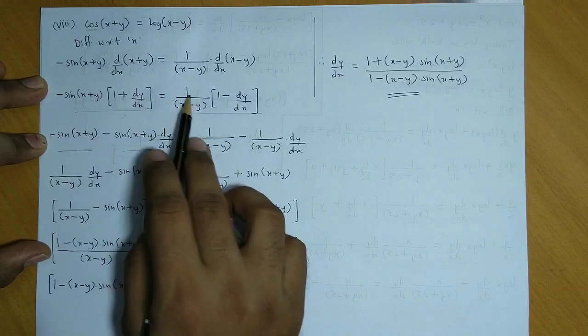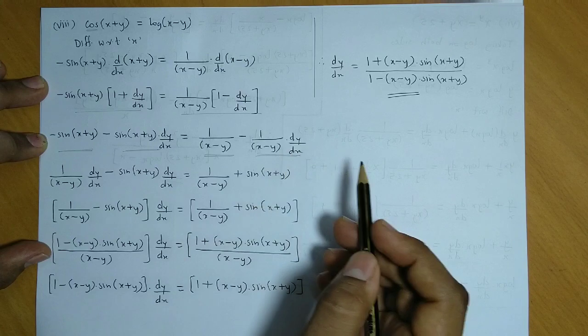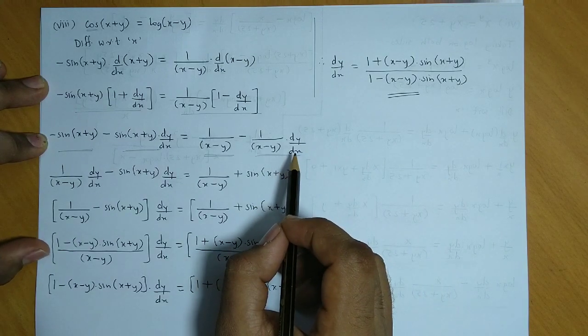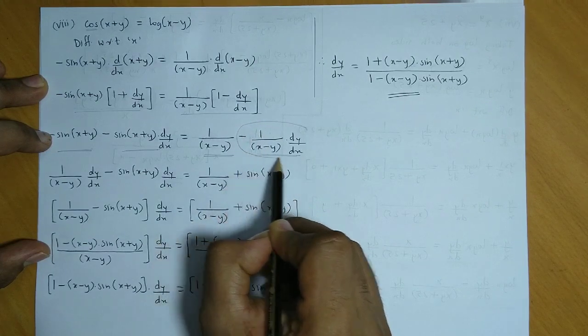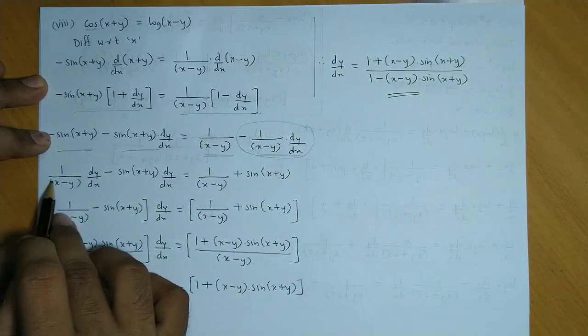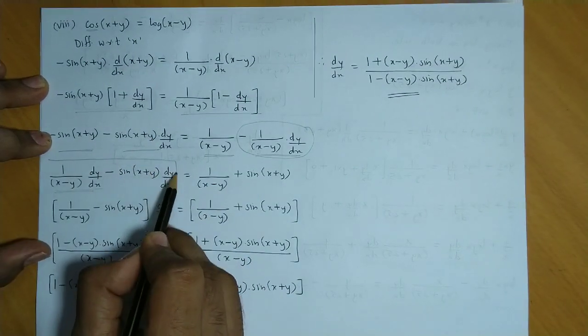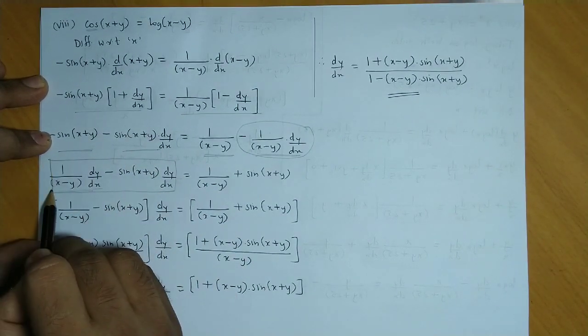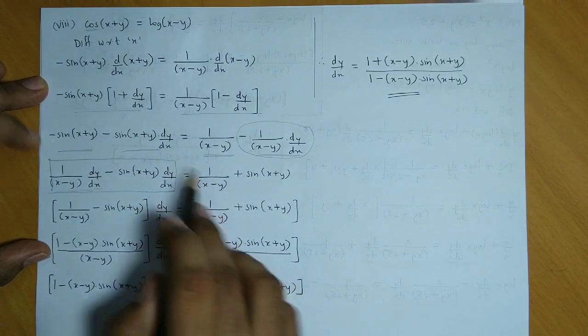Now next step, as always, dy by dx terms we take to one side. So the dy by dx term from here will go to the left. See over here. And this dy by dx term is already there, so here dy by dx terms have come. And on the right hand side, we have 1 upon x minus y, and this minus sin x plus y goes to the right, so we have the non-dy by dx terms.